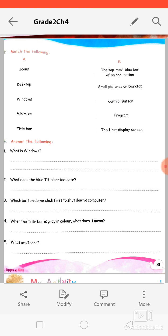Third question is which button do we click first to shut down a computer? So when we shut down the computer, first we do click on the start button to shut down a computer. Fourth question is when the title bar is gray in color what does it mean? So it means that the window is not active that time.